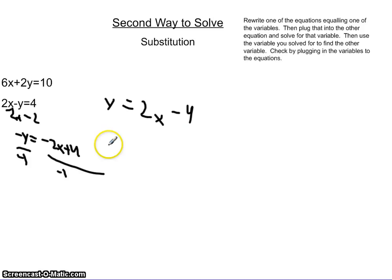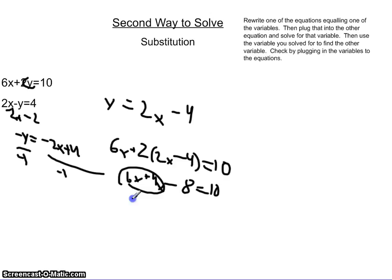We put this y into the y right here making it 6x plus 2 times 2x minus 4 equals 10. Then we distribute the two making it 6x plus 4x minus 8 equals 10 and add these two making it 10x and add the 8 to both sides making it 10x equals 18.